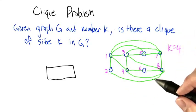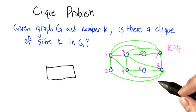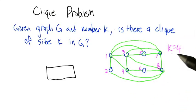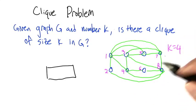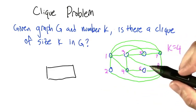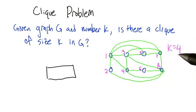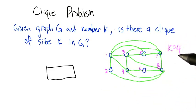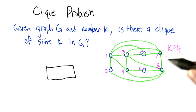Let's see if we can solve this problem. We're looking for a 4-clique. A 4-clique is going to have the property that each of the nodes is connected to each of the other nodes. So the degree of a node has to be at least 3.